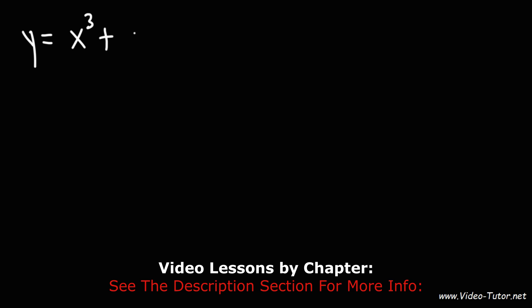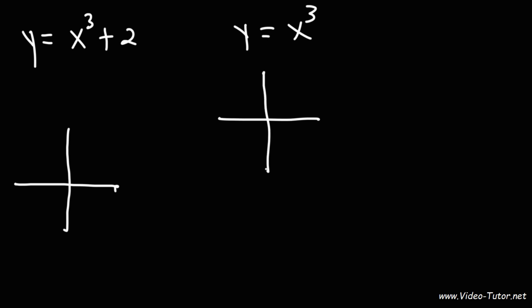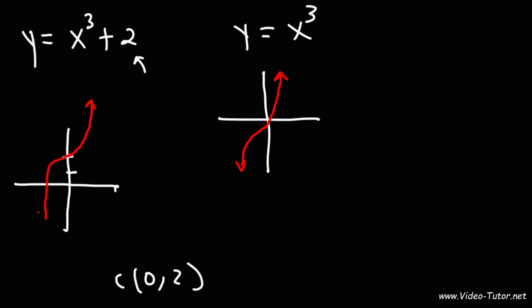Now let's talk about transformations. Let's say we have y is equal to x cubed plus 2. In the original function y equals x cubed, the center was at the origin. For this one, it's going to be shifted up 2 units, so the center is going to be at (0, 2). Once we have the center point, we can basically draw the graph.